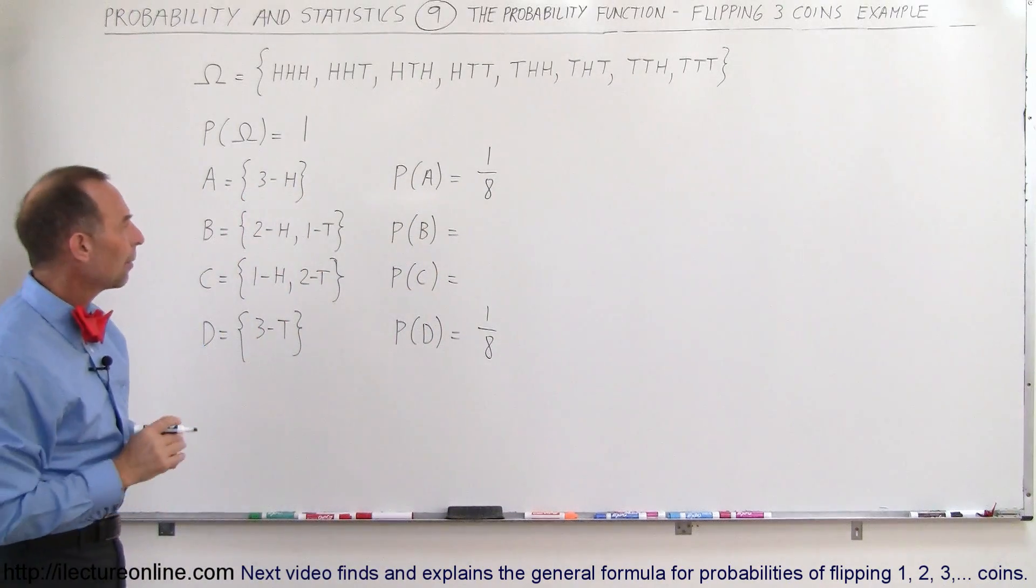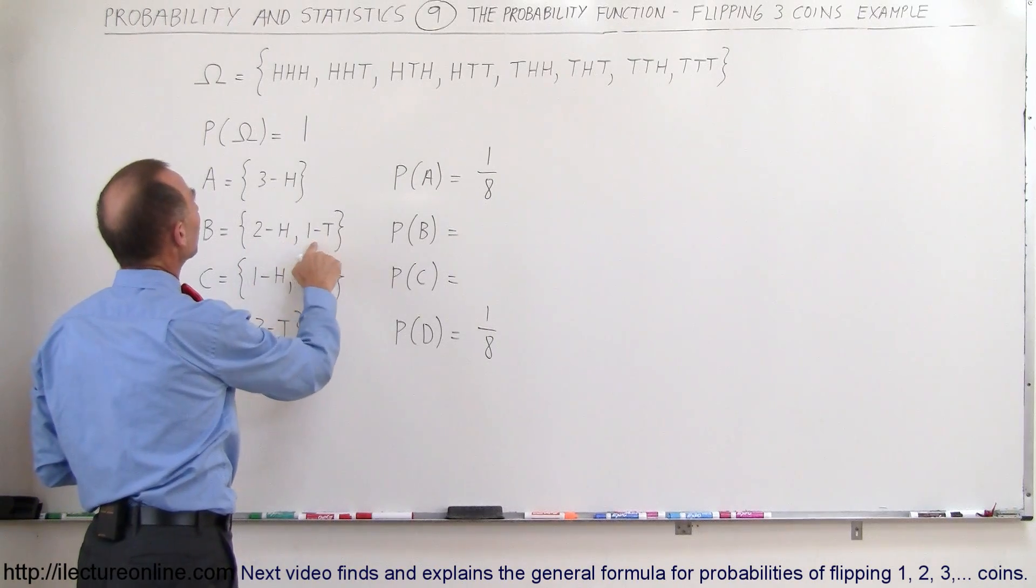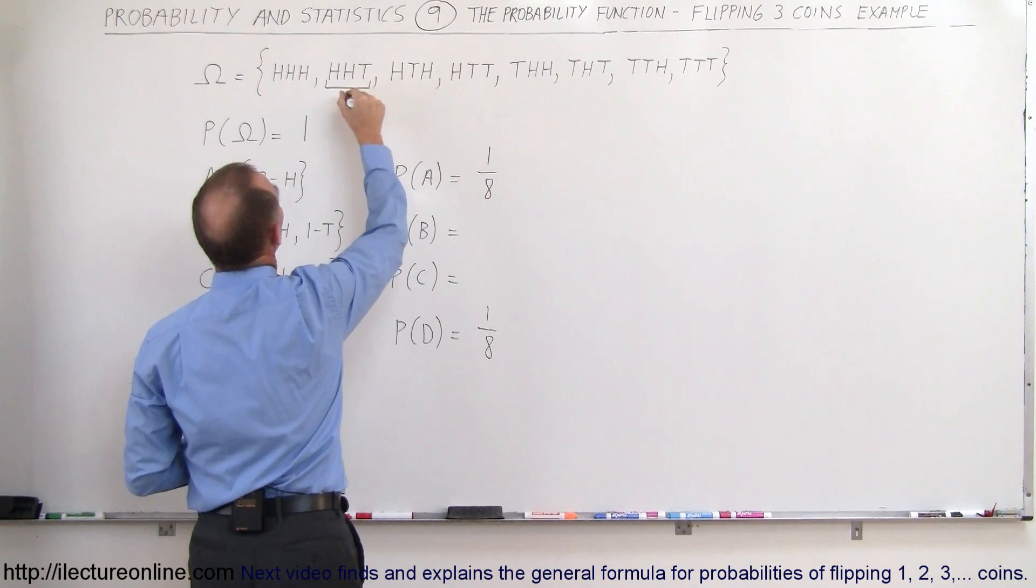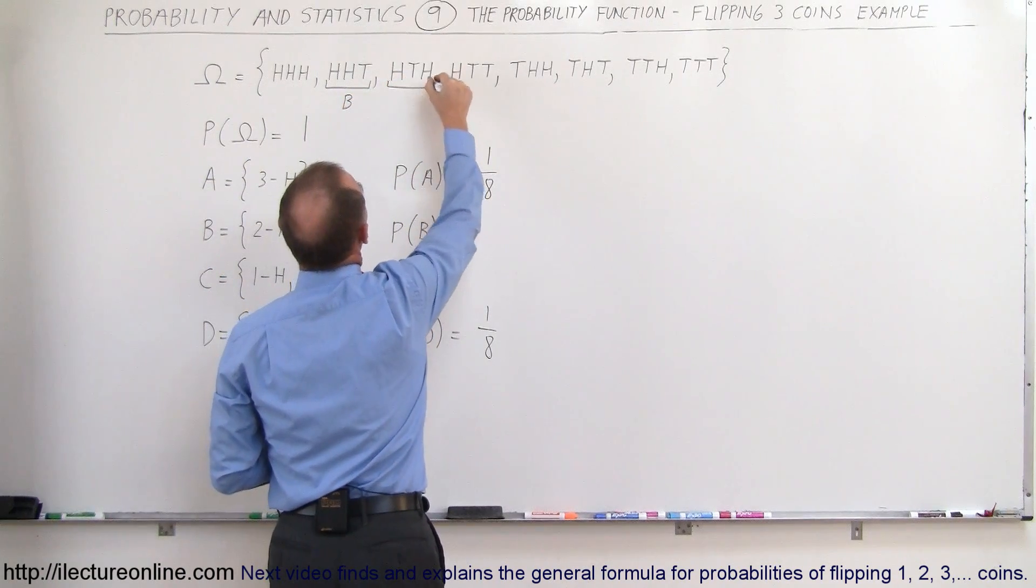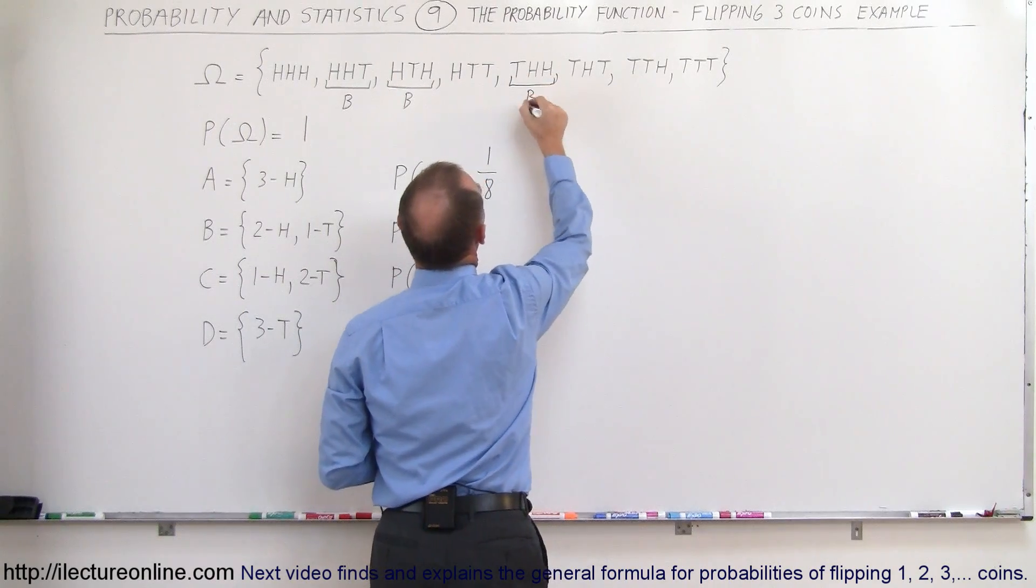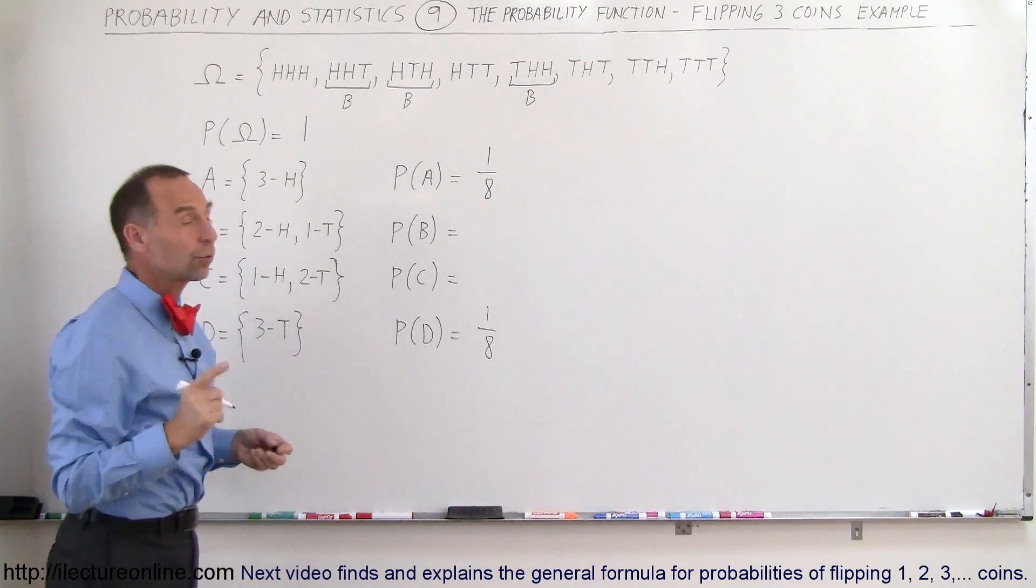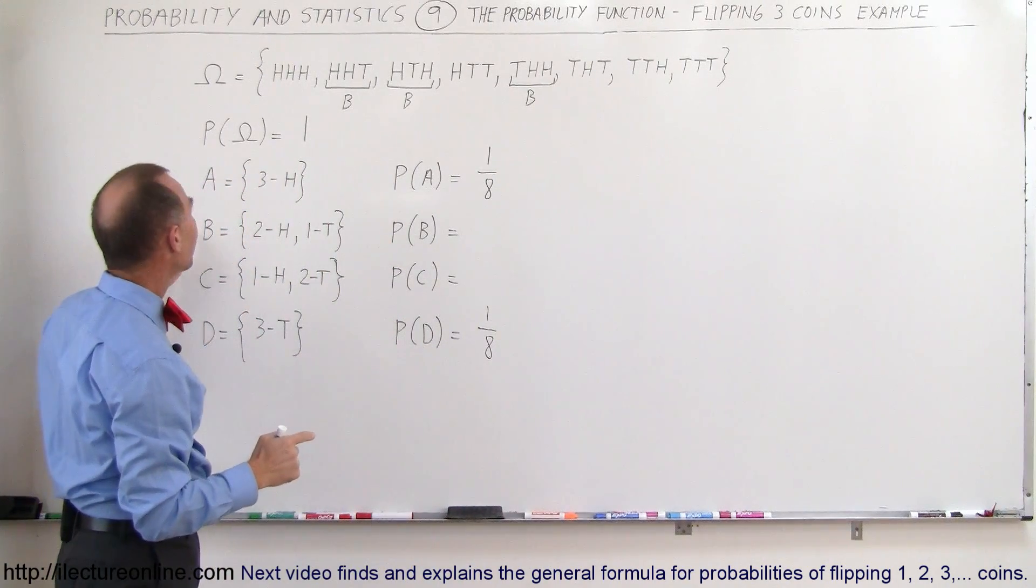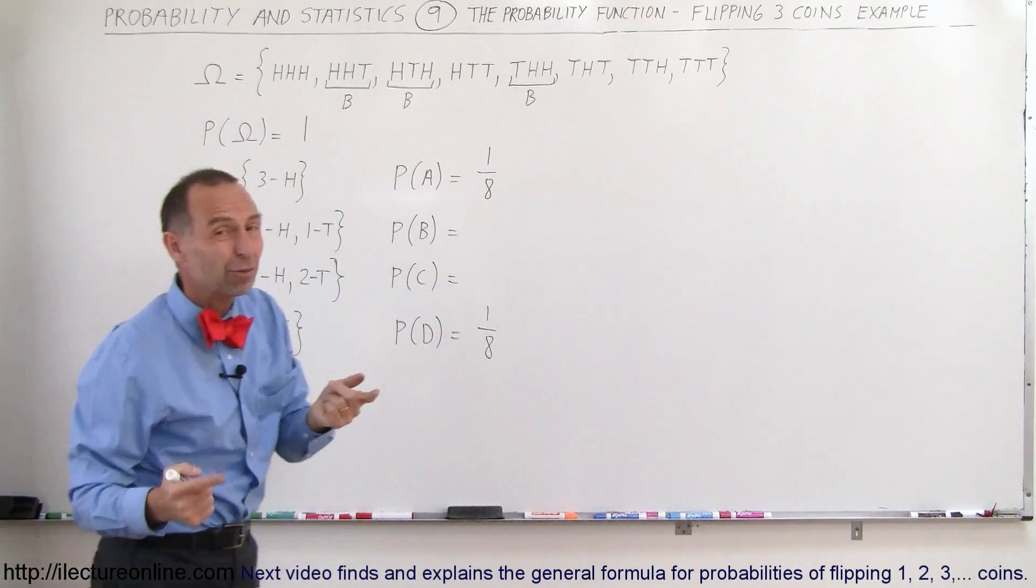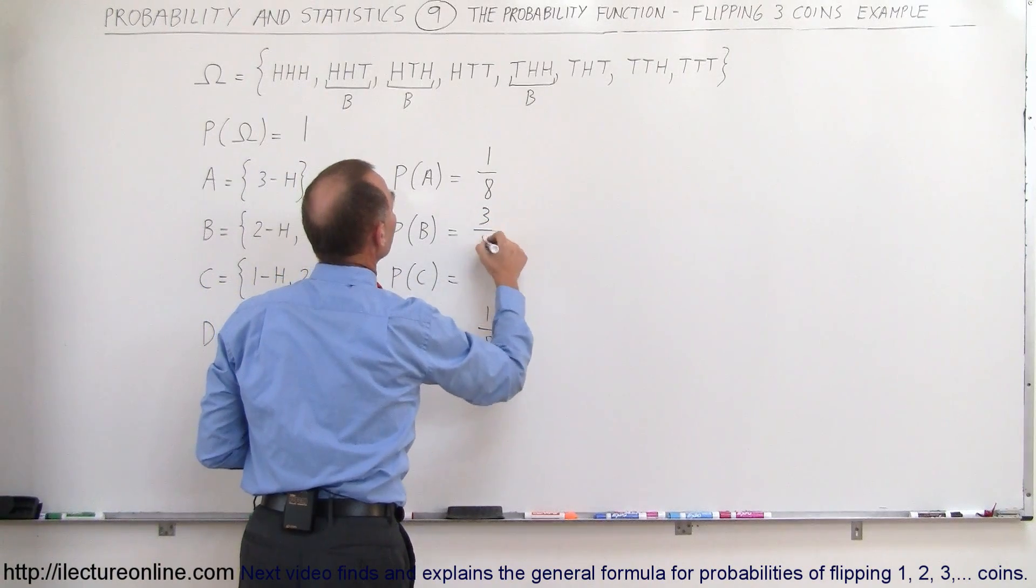What about the probability of B and the probability of C? Well, for B, we need two heads and one tail. So two heads, one tail would belong to B. Two heads, one tail would belong to B. Two heads, one tail belongs to B. That's it, there's no other possibility. So notice there are three elements in the event B. Three possible outcomes out of eight, so therefore the probability would be three out of eight.